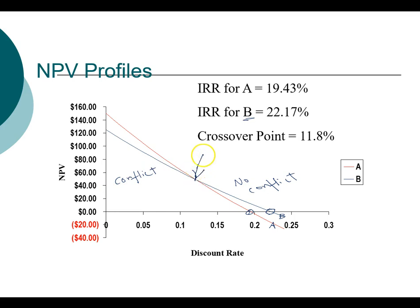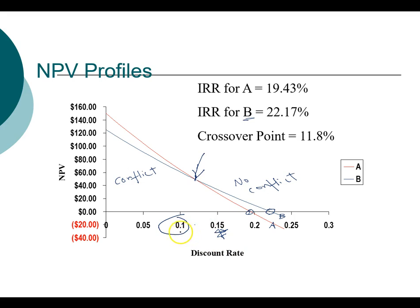This particular point is called the crossover point — the crossover point of 11.8%. This becomes important because even though today's required return is 10%, economic conditions can change. The Federal Reserve is likely going to increase interest rates, and if that happens, the required return for all projects will go up. Right now at 10% we say use the net present value method and choose project A. However, if there's a good chance the required return goes up — say to 15% in an extreme case — then project B becomes the better project. So we're talking about uncertainty: today the discount rate is 10%, but we want to take into account the chances of it going up or down. The crossover point is the key piece of information that can make an important difference.